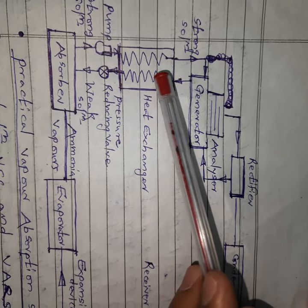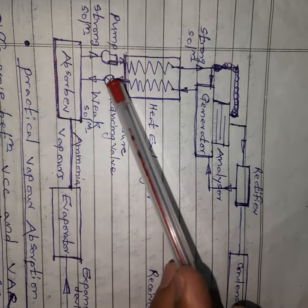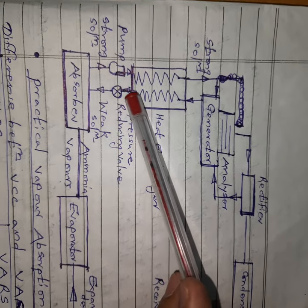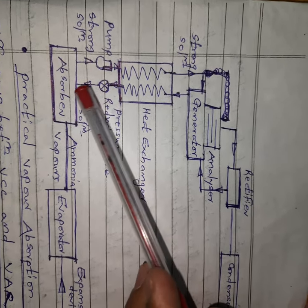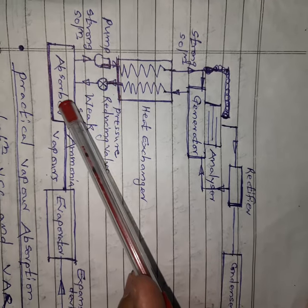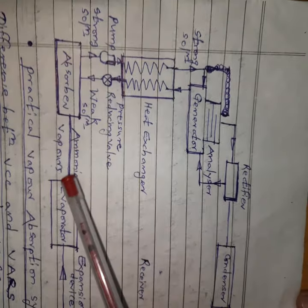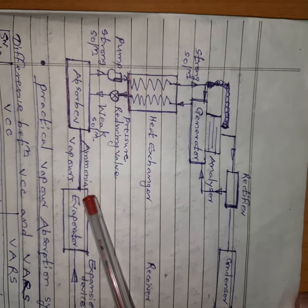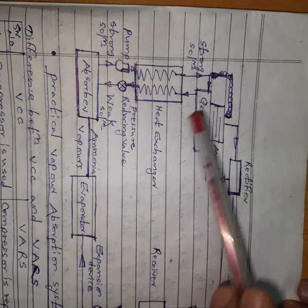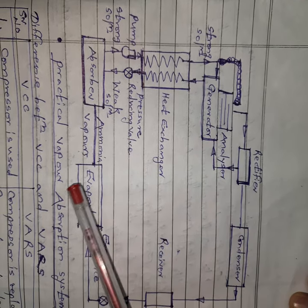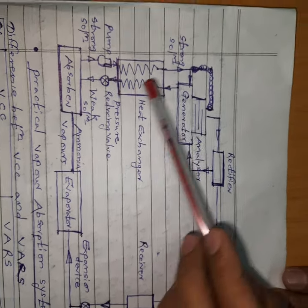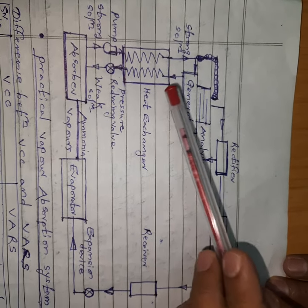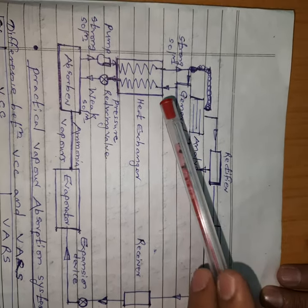When the cooled weak solution passes through the pressure-reducing valve, pressure decreases and temperature decreases. When this cold weak solution enters the absorber it can absorb more ammonia vapors, increasing output. Output increases, input decreases, and the overall coefficient of performance increases because of the heat exchanger. By simply using a heat exchanger, we can improve the COP of the vapor absorption system.